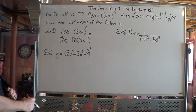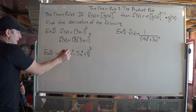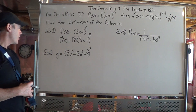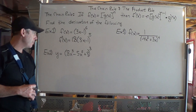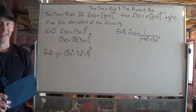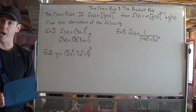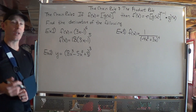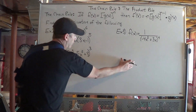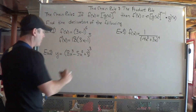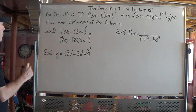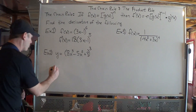Same idea here: y equals x cubed minus 5x squared plus 3, all to the power of 3. Again, I could use the power rule, but that would be annoying — multiplying this by itself three times and then finding the derivative. So again, I'm going to use the chain rule.